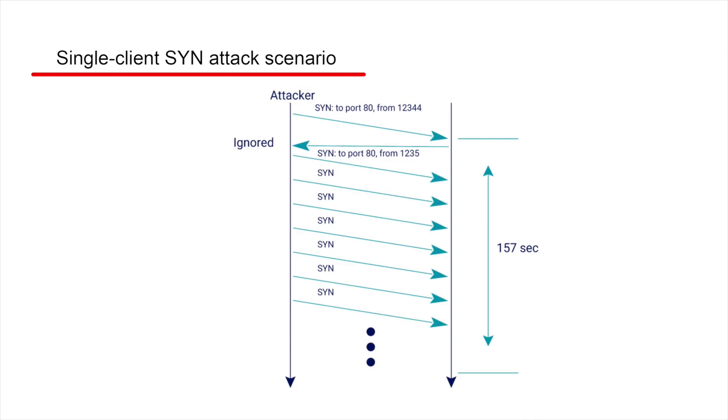If the attacker constantly sends SYN requests, then 157 seconds times bandwidth divided by the SYN requests equals the number of messages sent. If we multiply this amount by X, we'll know how much memory we're reserving.